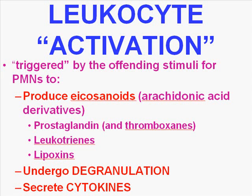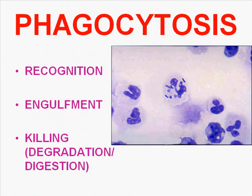Last but not least, the leukocytes have to recognize perhaps antigens, perhaps pathogens, perhaps dead tissue. They have to engulf it by the process of phagocytosis, and then they have to try to kill it. Theoretically, you now have bacteria inside these neutrophils, and they have to digest it. So phagocytosis is another complex process involving recognition of the antigen or stimulus, engulfment, and then killing, degradation, and digestion.